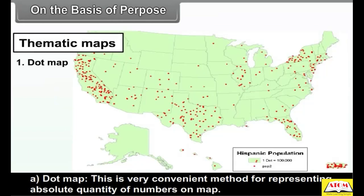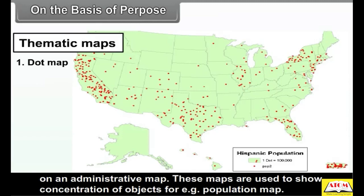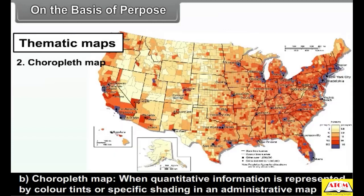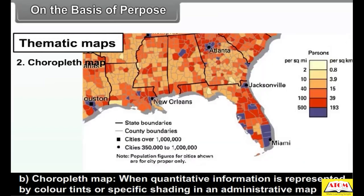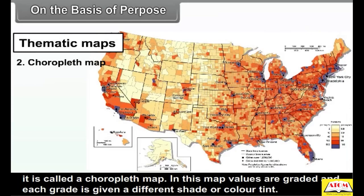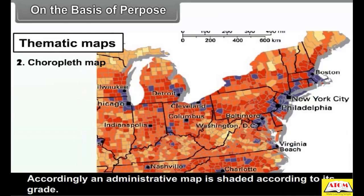Dot map: this is a very convenient method for representing absolute quantity or numbers on a map. Each dot represents a certain number of objects or given data. According to the data, a number of dots are plotted on an administrative map. These maps are used to show concentration of objects, for example, a population map. Choropleth map: when quantitative information is represented by color tints or specific shading in an administrative map, it is called a choropleth map. Values are graded and each grade is given a different shade or color tint, and the administrative map is shaded according to its grade.